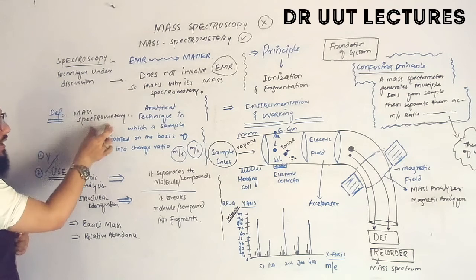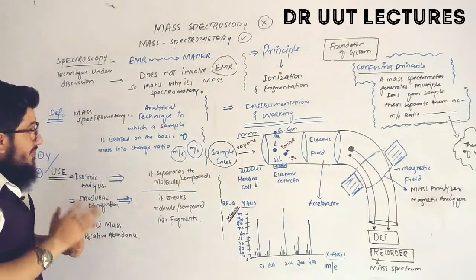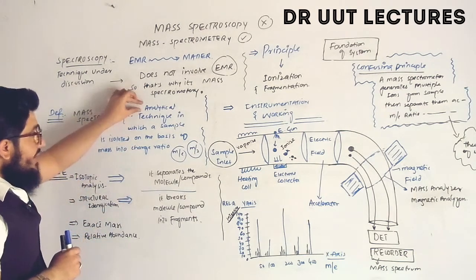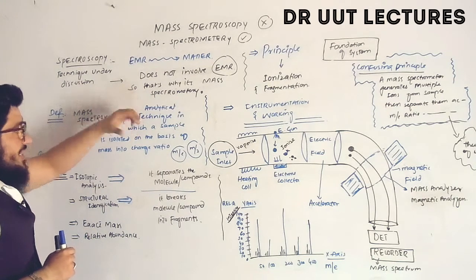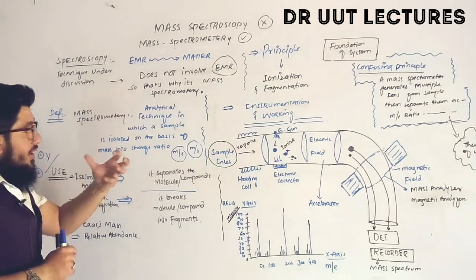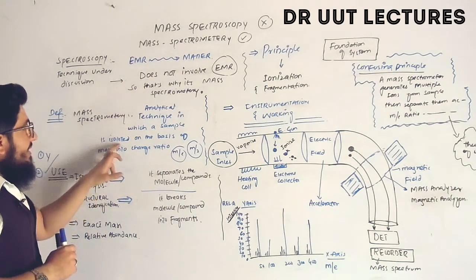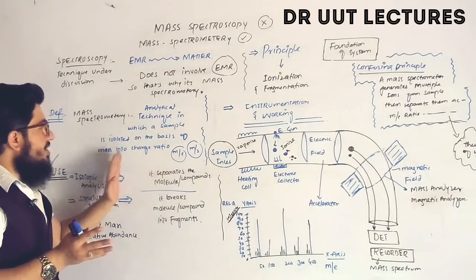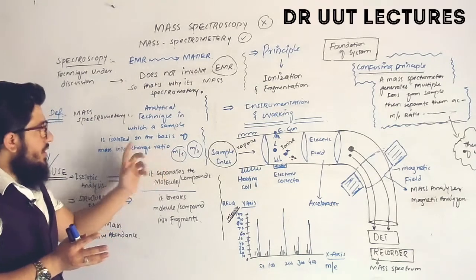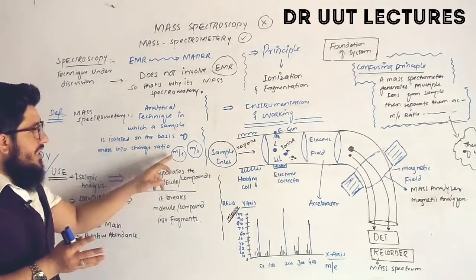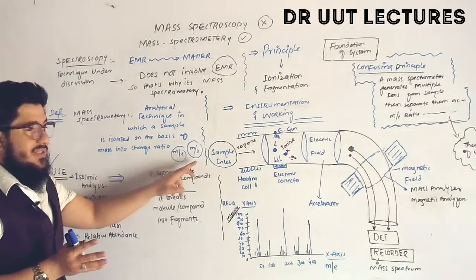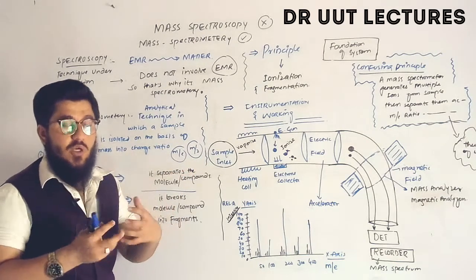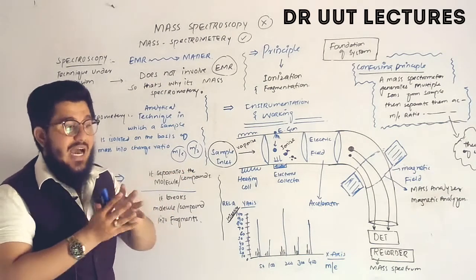The definition of mass spectrometry is straightforward. It is an analytical technique in which a sample is taken and isolated on the basis of mass-to-charge ratio, written as M/E or M/Z. So on the basis of mass-to-charge ratio, we isolate our sample.